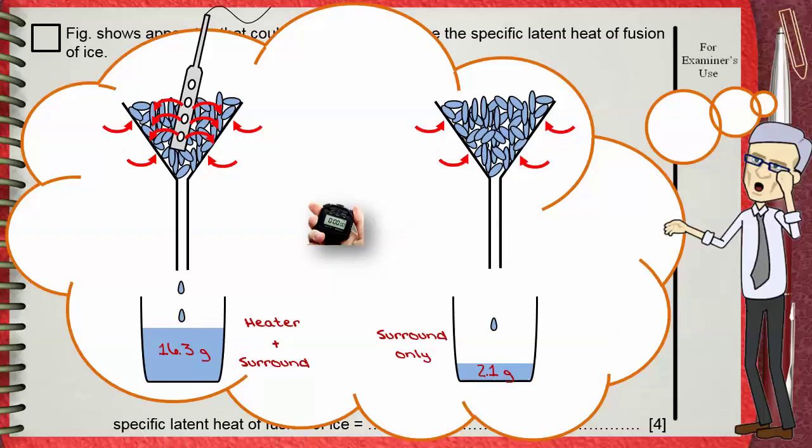This is how we can practically exclude the effect of heat gained from the surround. And this minimizes our error.